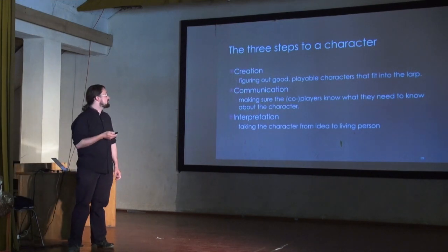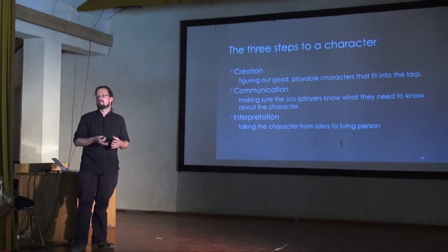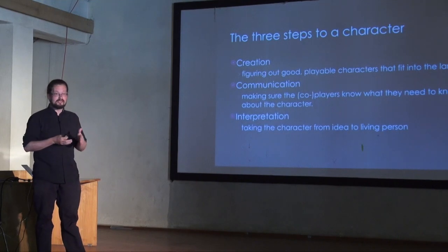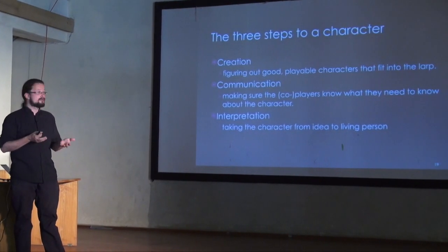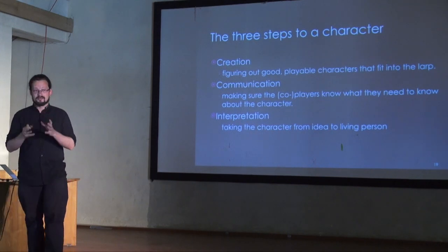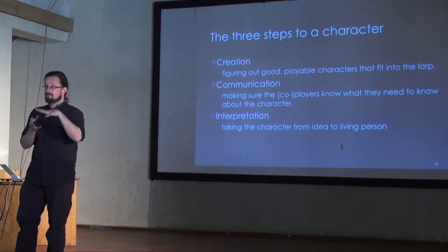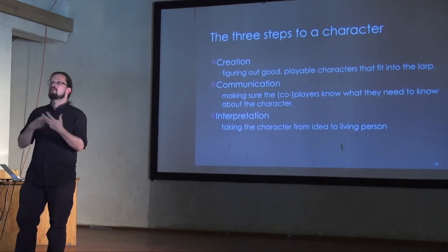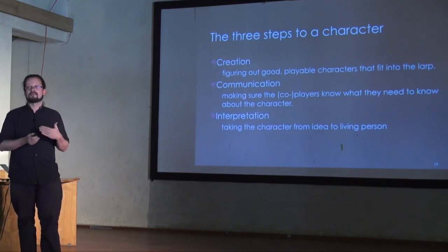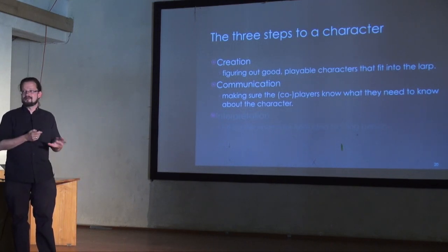There are three steps in creating a character as a LARP designer. First, figuring out good playable characters — the creative, artistic process of coming up with interesting people that fit your LARP. Second, communicating them — making sure the player knows what they need to know; that's the clarity aspect. Third, interpretation — when someone gets a piece of paper or verbal instructions and is told to play a character, they take the hooks provided and add their own experience, interpretation, and ideas on top. This can be facilitated through drama workshops and dialogue.